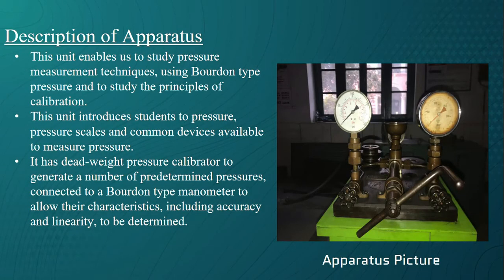This unit enables us to study pressure measurement techniques using Bourdon type pressure and to study the principles of calibration. This unit introduces students to pressure, pressure scales, and common devices available to measure pressure. It has dead weight pressure calibrator to generate predetermined pressures connected to a Bourdon type manometer to allow their characteristics, including accuracy and linearity, to be determined.